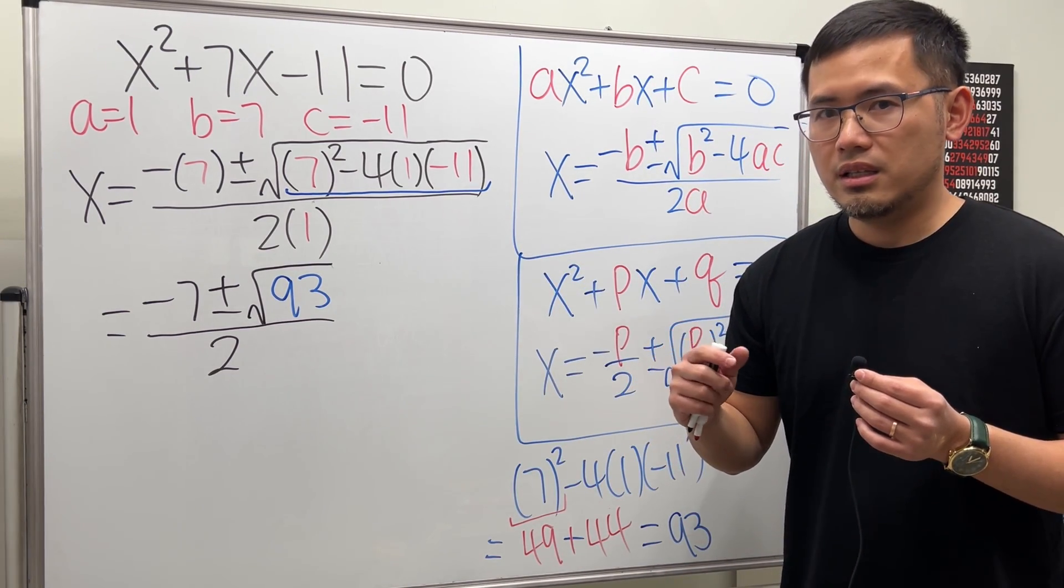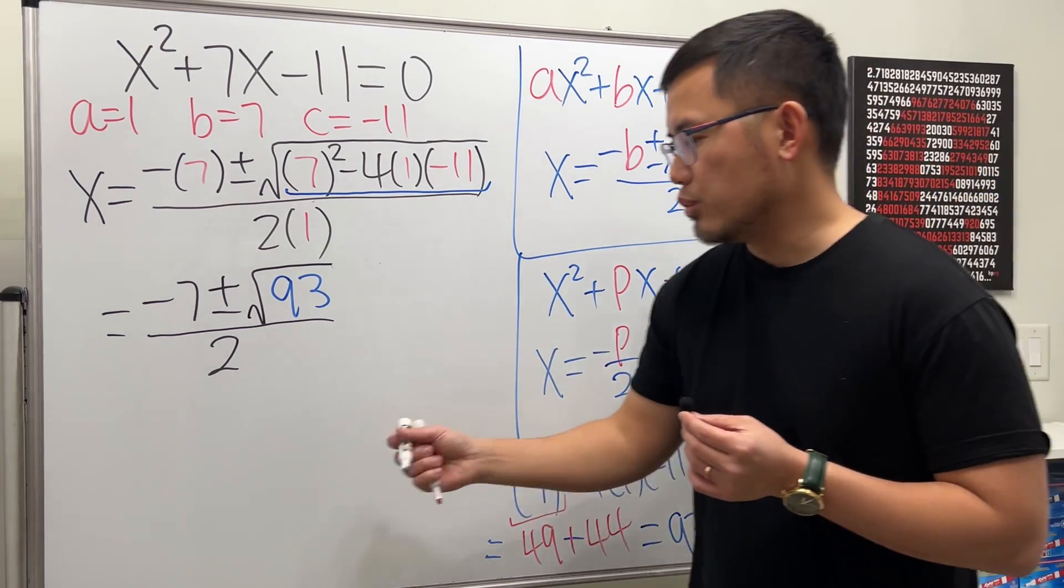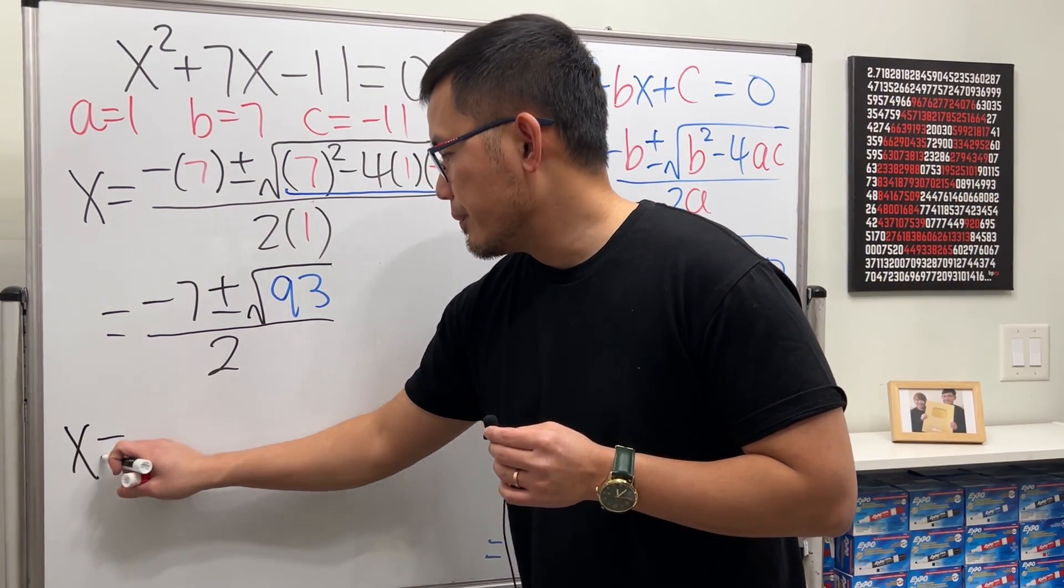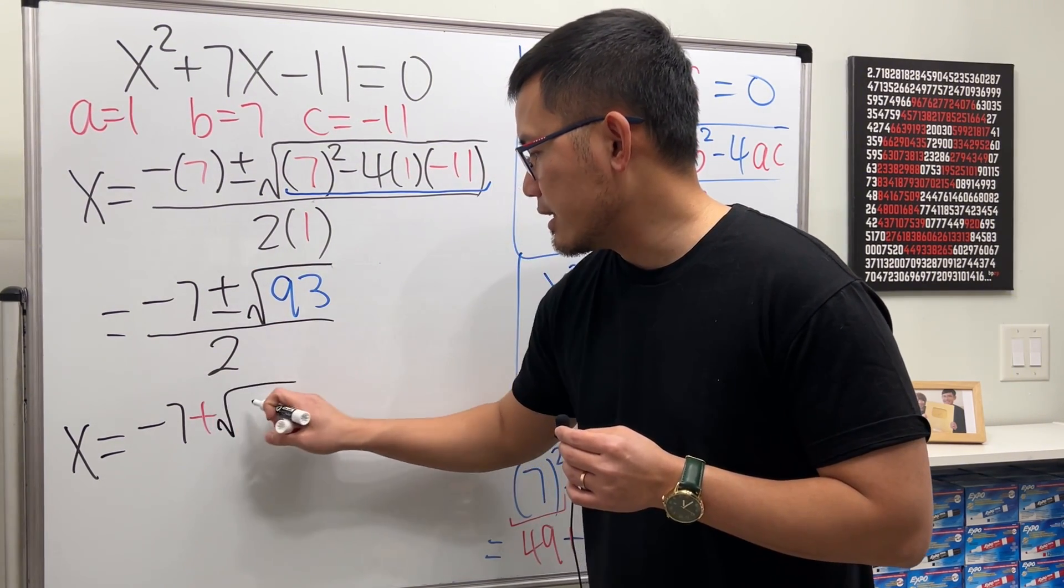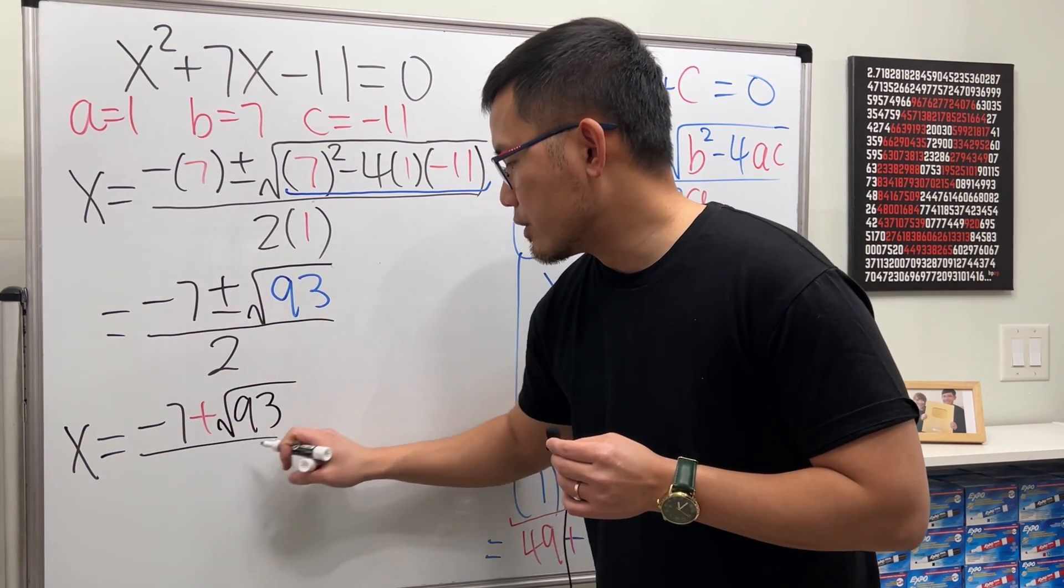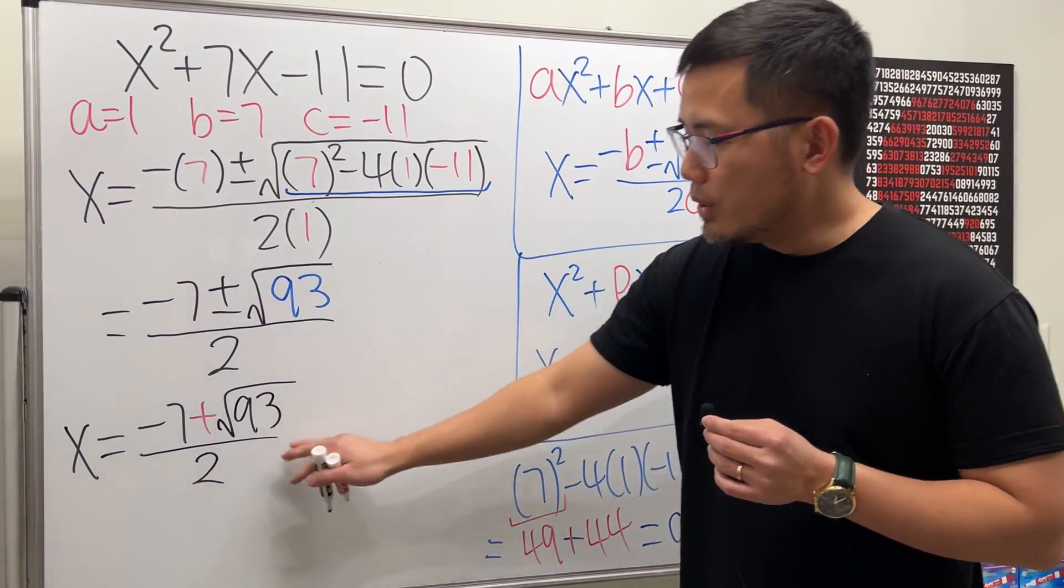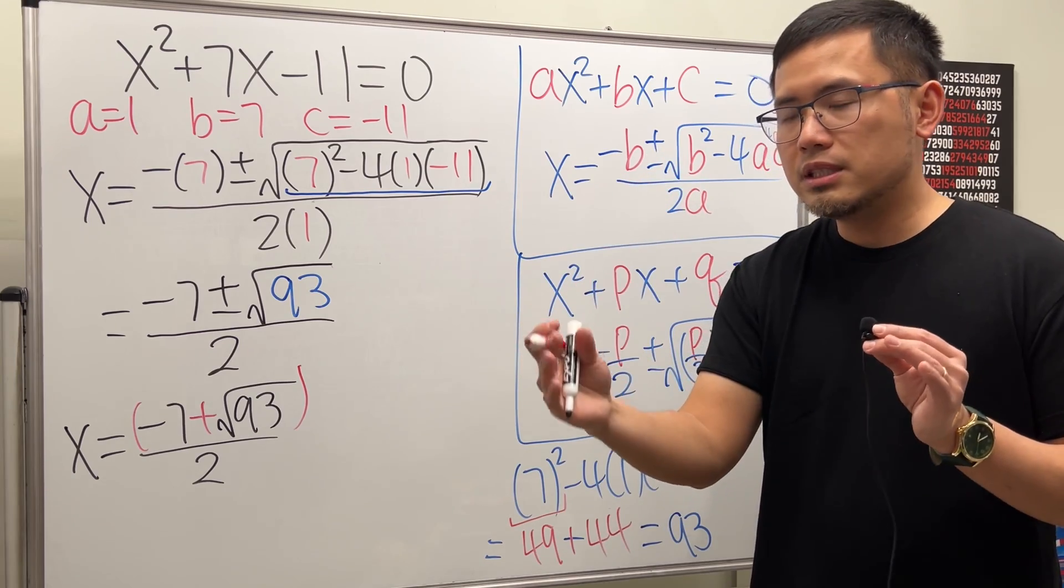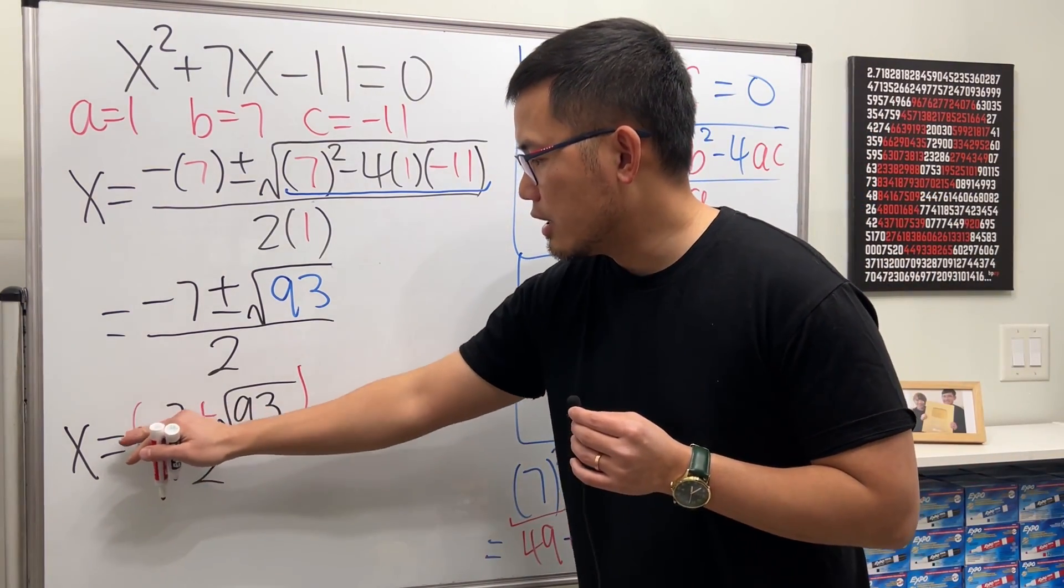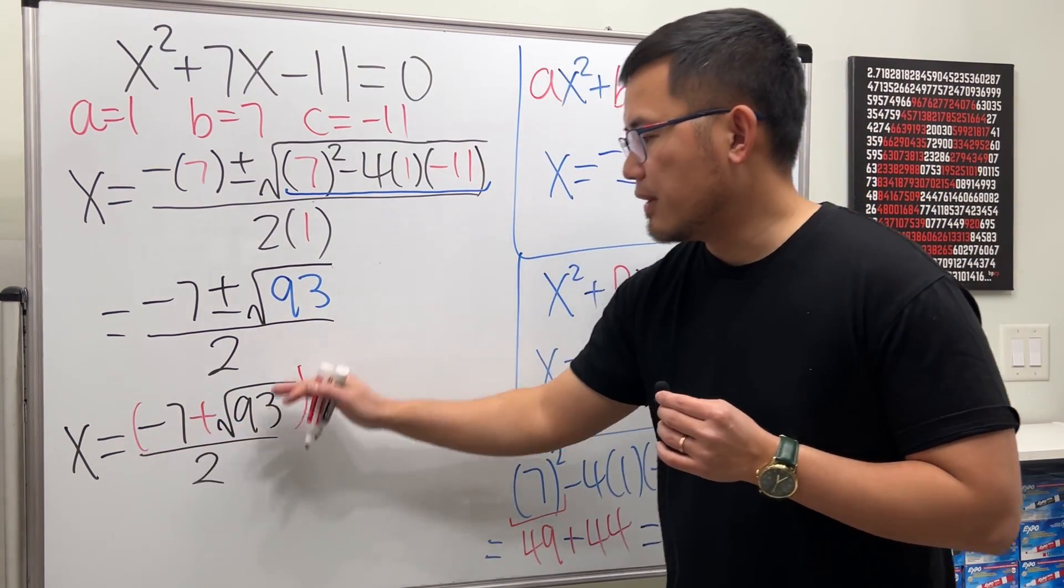First do -7 with the plus, and then square root of 93 over 2. When you enter this on your calculator, make sure you put parentheses on the numerator, the entire parentheses, right? The entire numerator in the parentheses, and then divide it by 2.